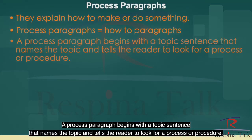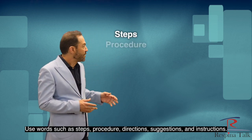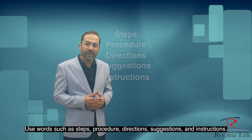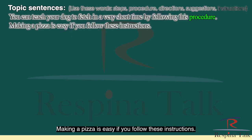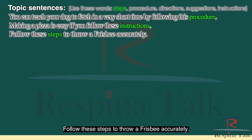A process paragraph begins with a topic sentence that names the topic and tells the reader to look for a process or procedure. Use words such as steps, procedure, directions, suggestions, and instructions. Here are some example topic sentences: "You can teach your dog to fetch in a very short time by following this procedure." "Making a pizza is easy if you follow these instructions." "Follow these steps to throw a frisbee accurately."